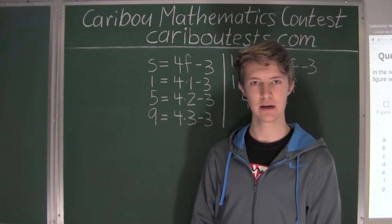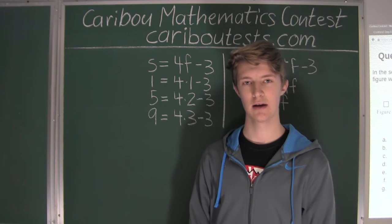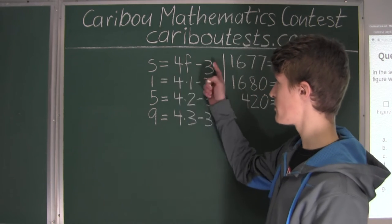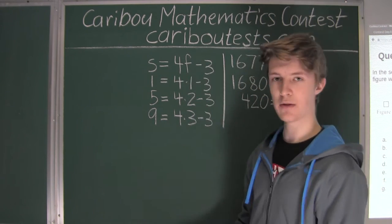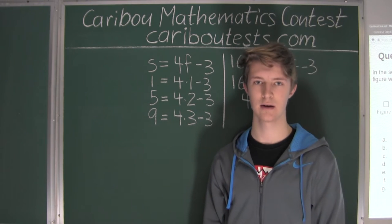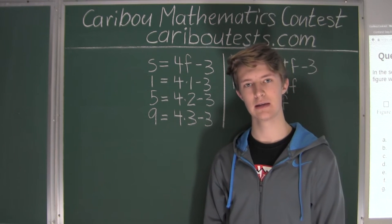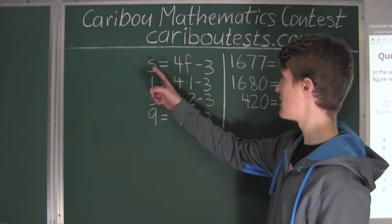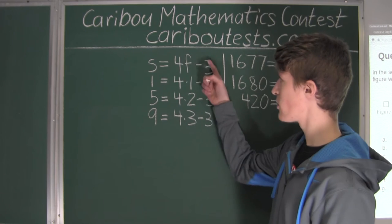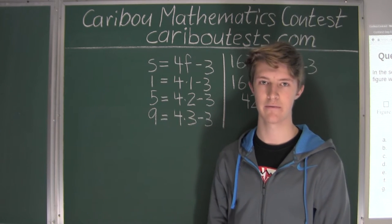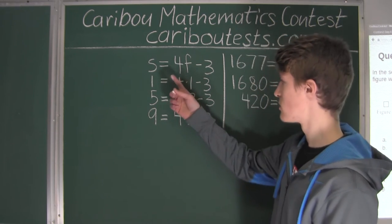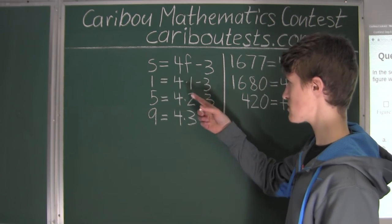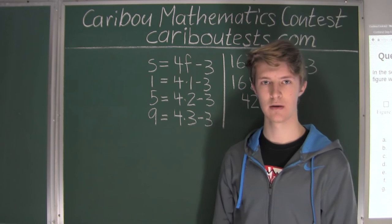If we're not under time pressure and want to prove the formula works for any positive integer F, we can use proof by induction. Proof by induction has two steps. Step 1 is showing the formula works for a small initial value of F, like 1, 2, or 3, which we have already done. Step 1 is complete.